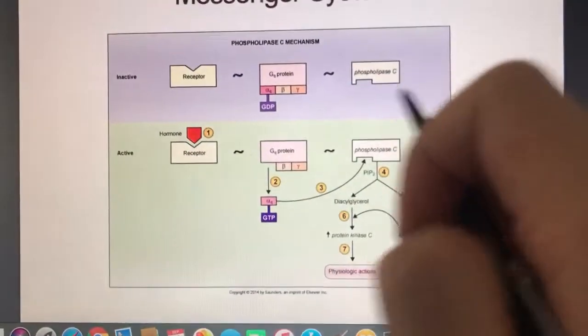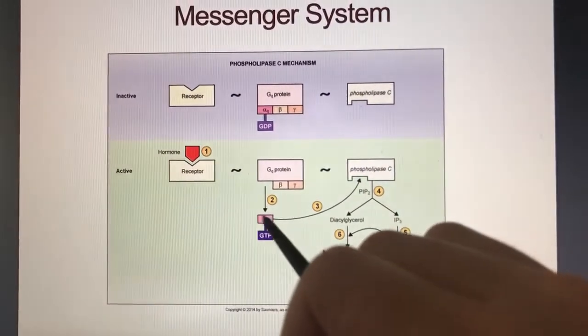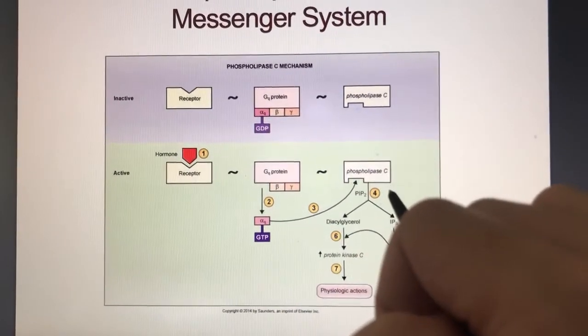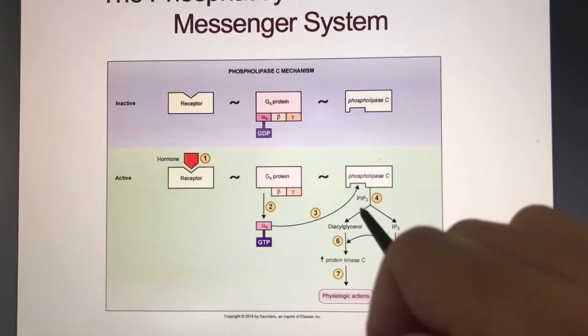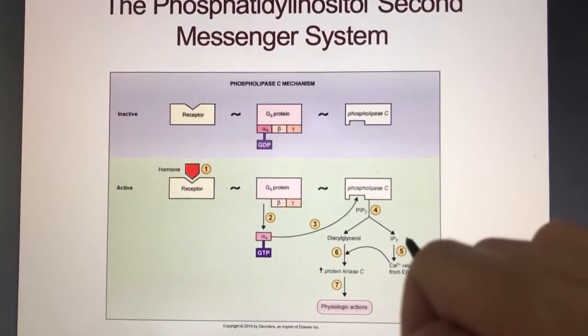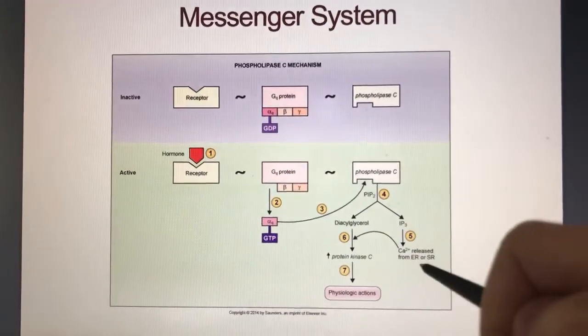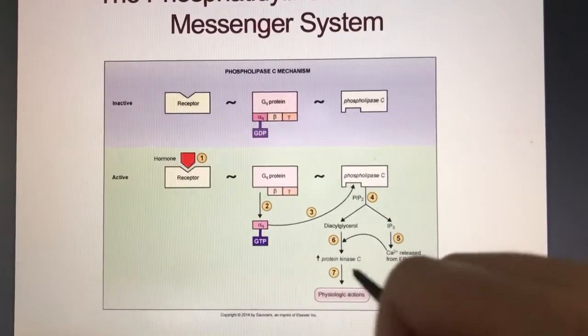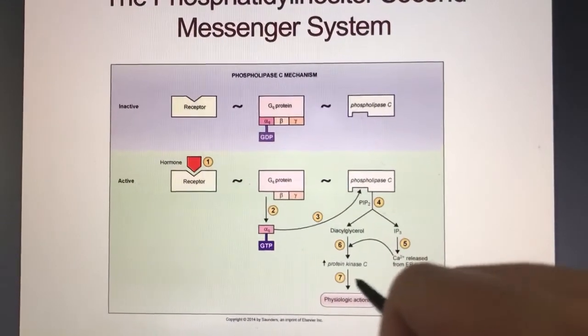So basically it's the same system as cyclic AMP. The differences are in the GQ protein and then the phospholipase C, and then what's happening in this area where PIP2 becomes IP3. IP3 gets calcium to be released. It goes over here to DAG, and then it makes protein kinase C. So there you have it.